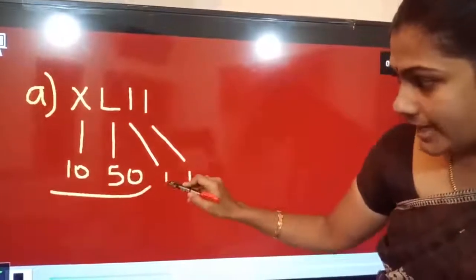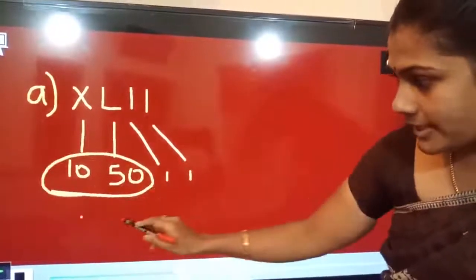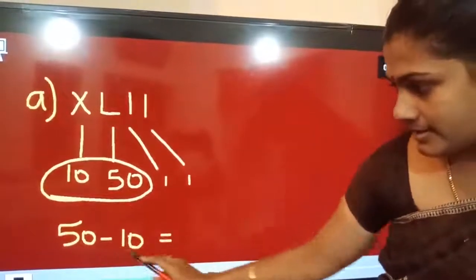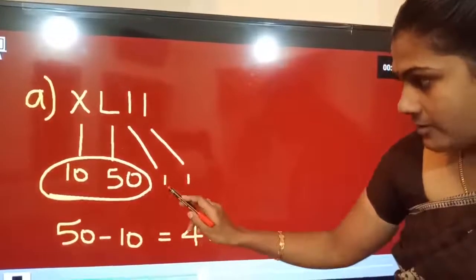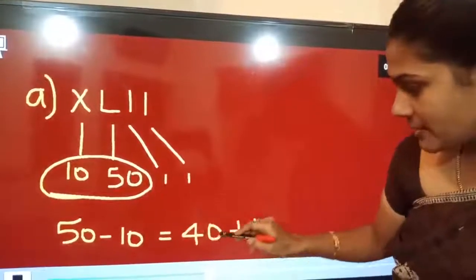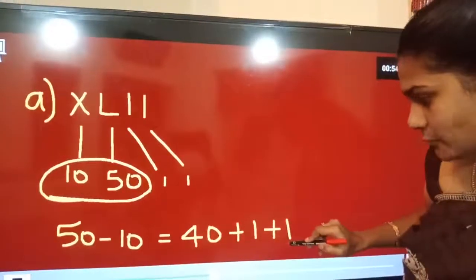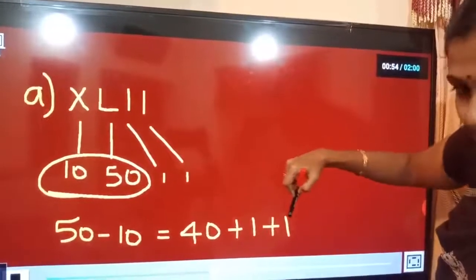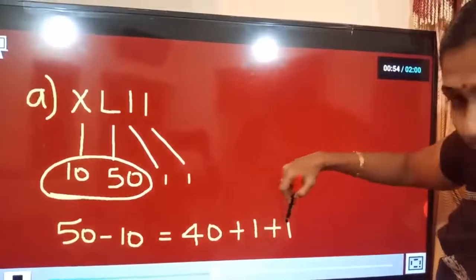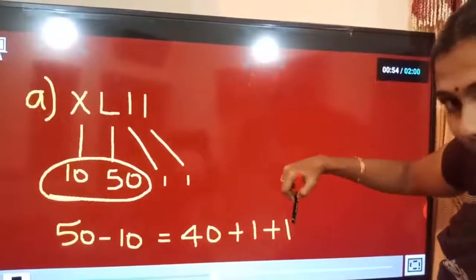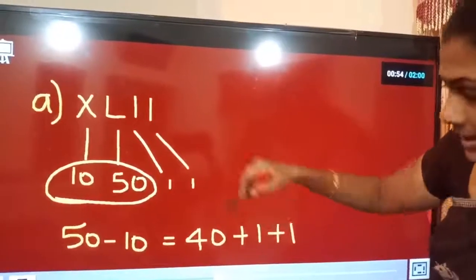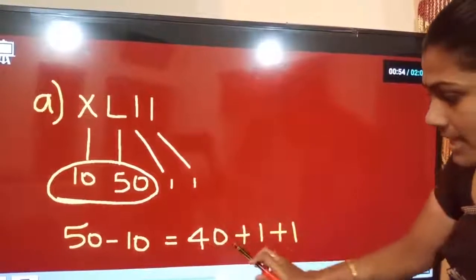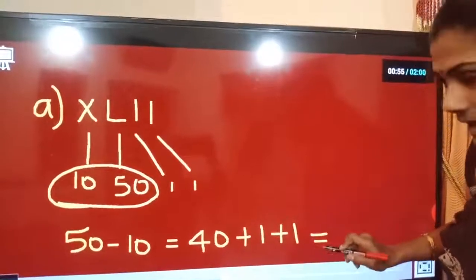So we get 40. Then we have 1 and 1 remaining. Now 40 is the result, and the next numbers are small. If the next number were bigger than 40, we would subtract, but here they are small numbers, so we add. So 40 plus 1 plus 1 — we get the answer 42.